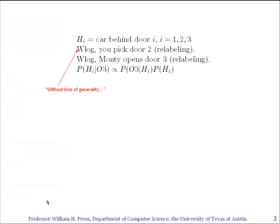Clearly, this is a good problem to apply Bayes' rule to. There are exactly three hypotheses corresponding to which door the car is behind: 1, 2, or 3.